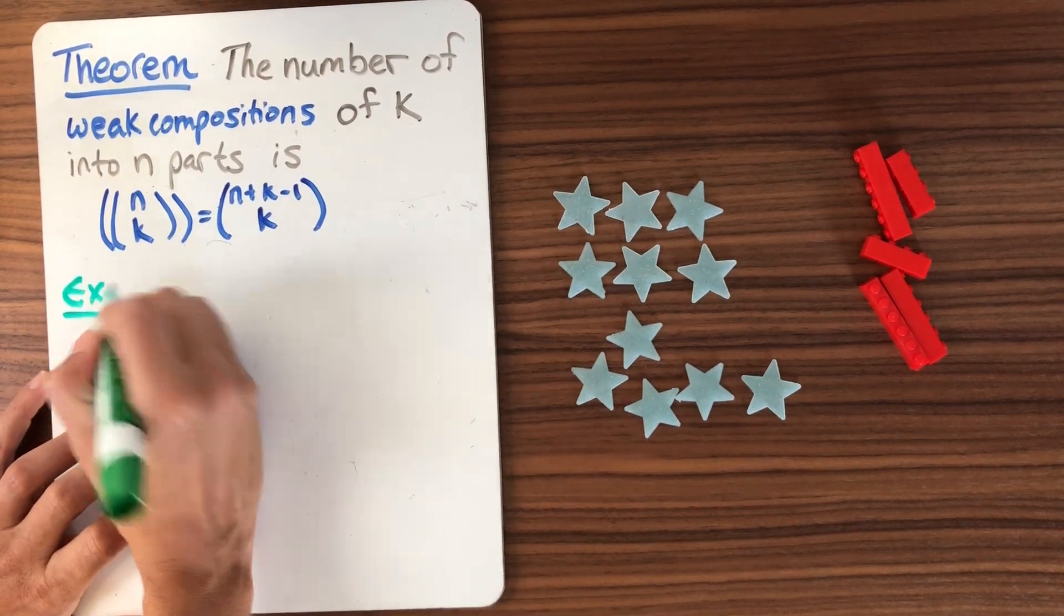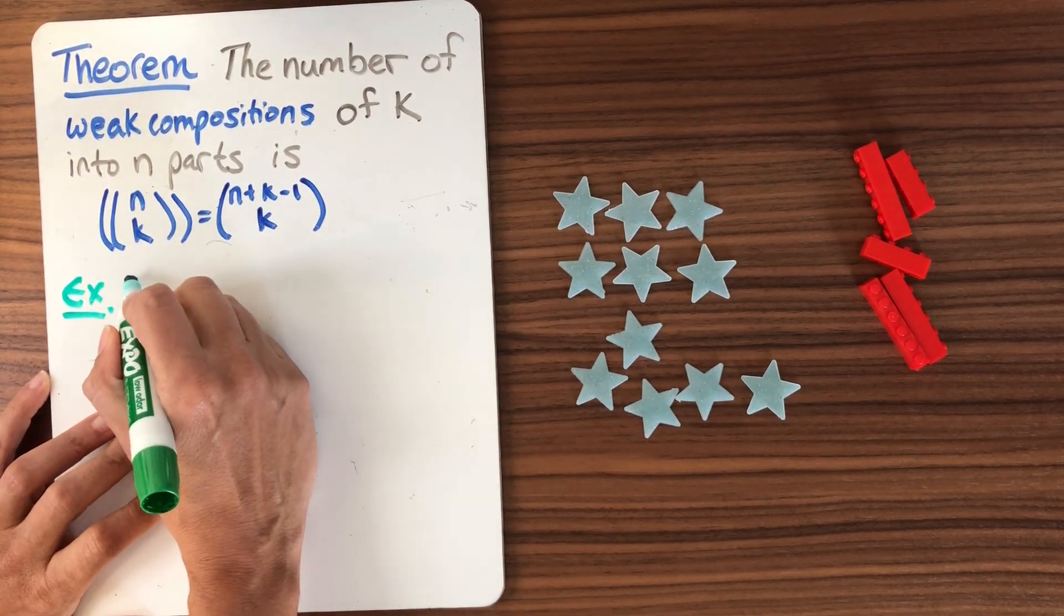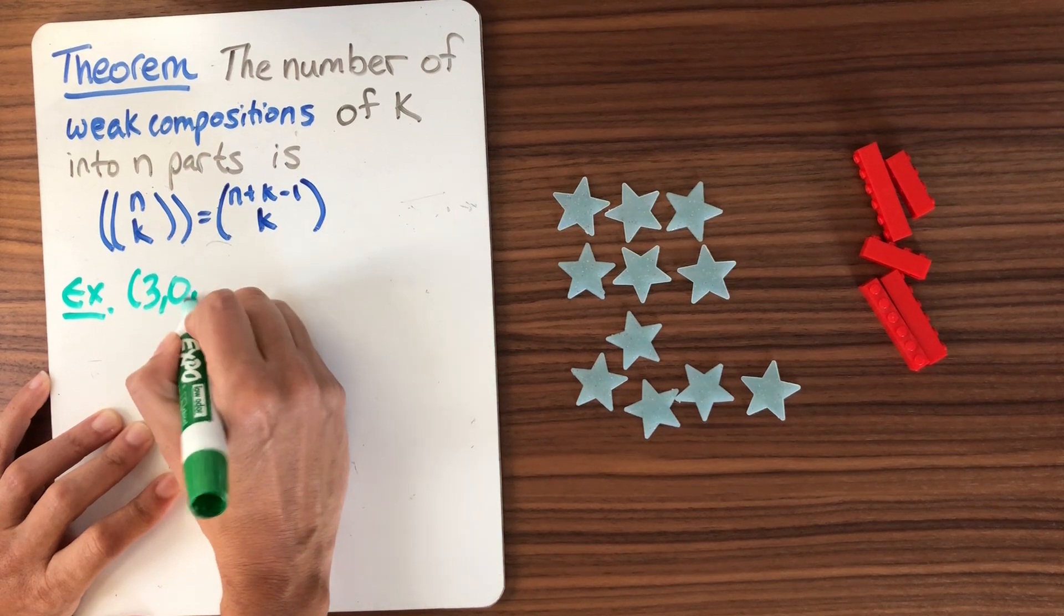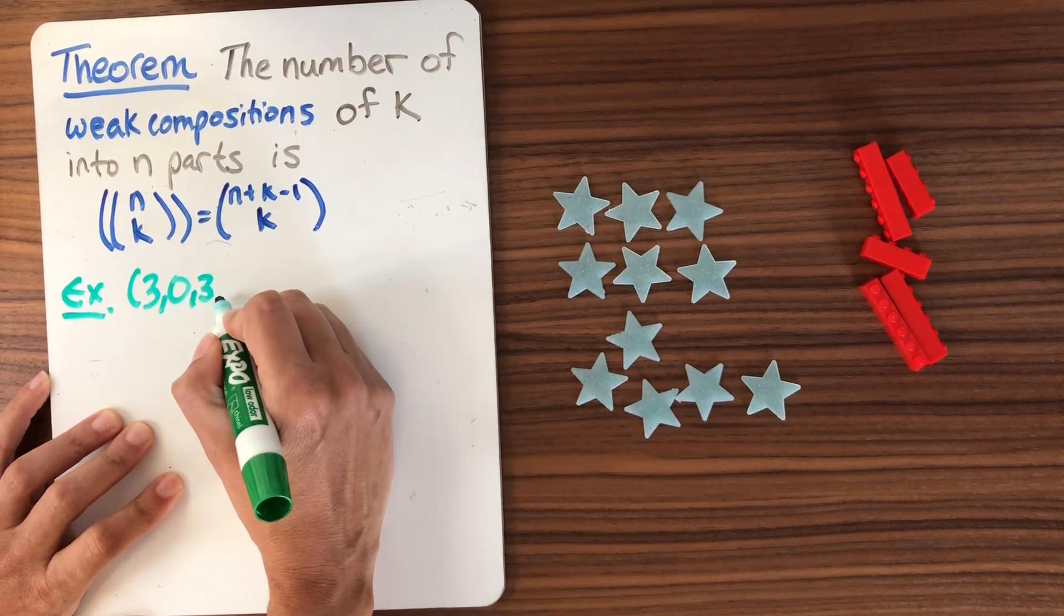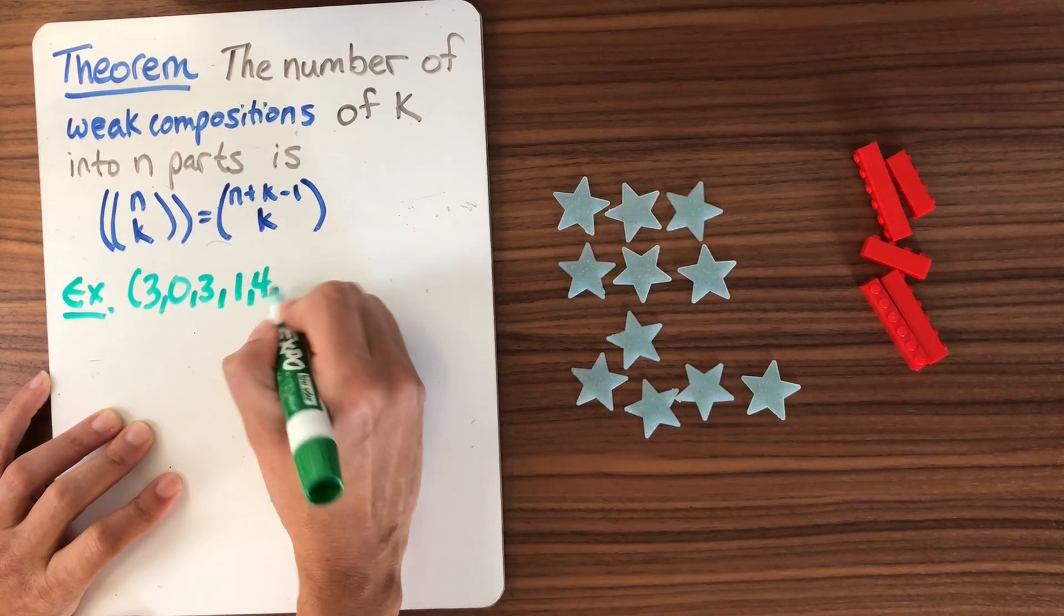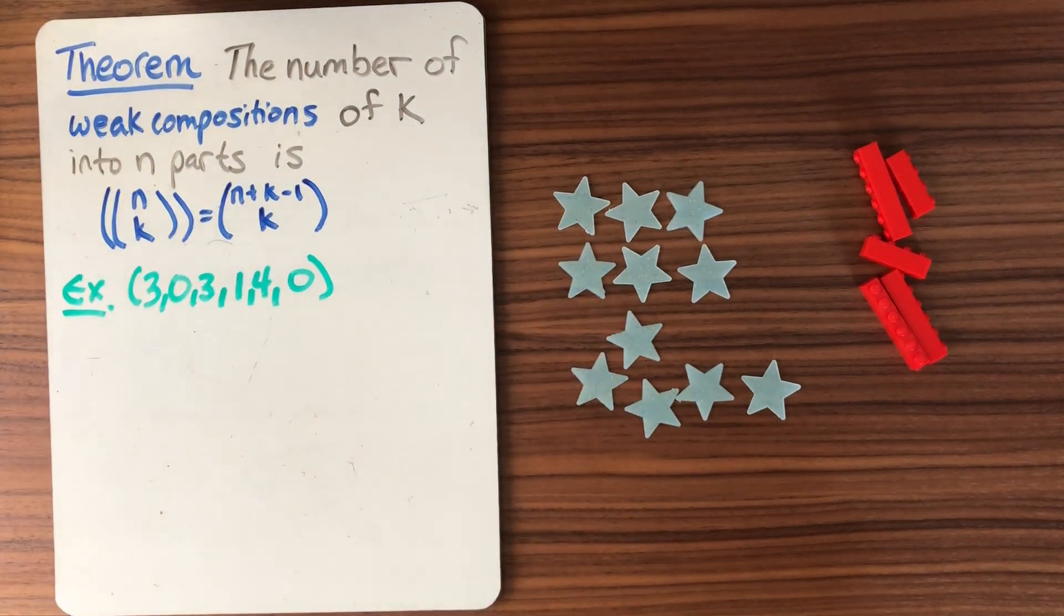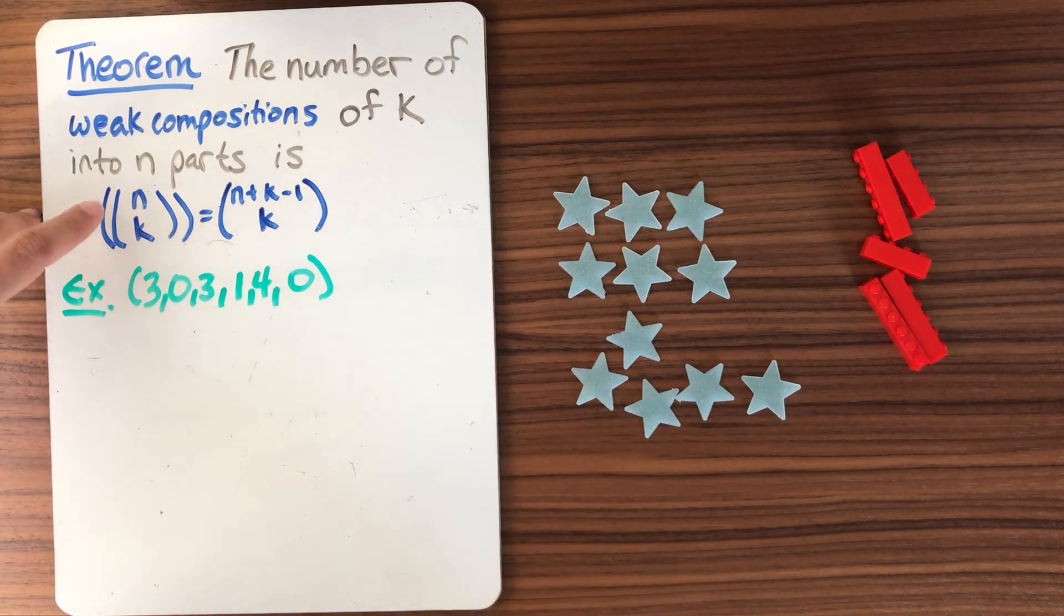And let's think about how could we represent our example in terms of stars and bars. So that example from last time from the previous slide is 3, 0, 3, 1, 4, 0. How can I think of this as stars and bars? Now the hint is in the structure here. Remember this, if I'm thinking of this as stars and bars,